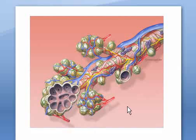The blue blood vessels are branches of the pulmonary artery, which is the only artery in the human body that carries deoxygenated blood. It brings deoxygenated blood from the heart to the lungs.